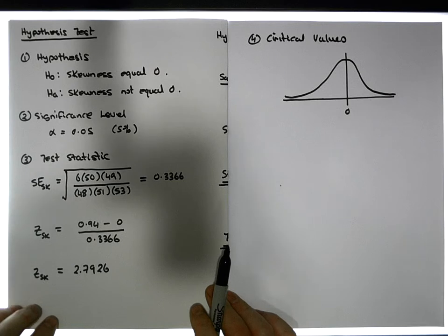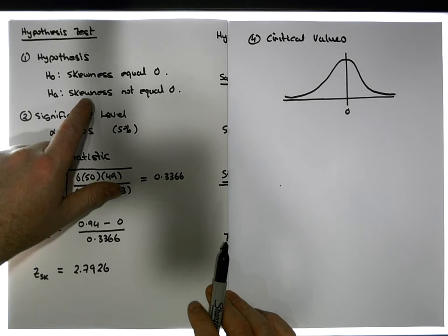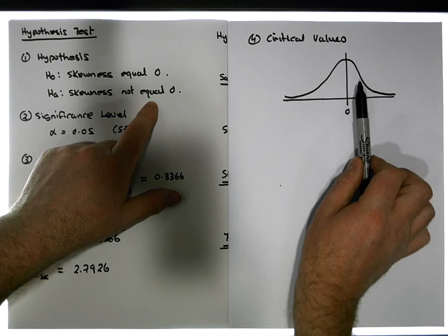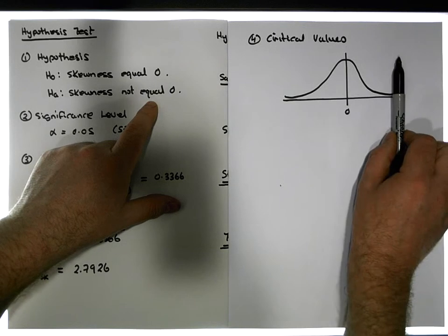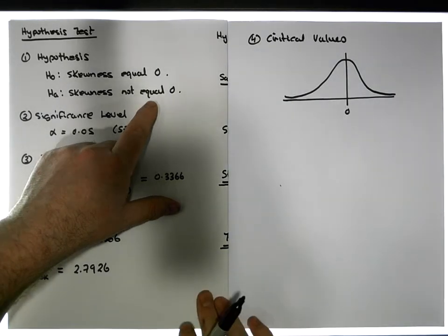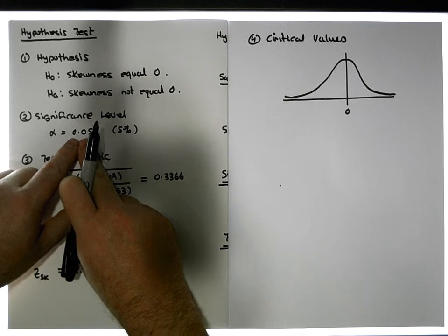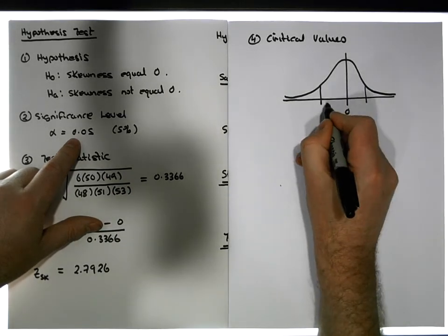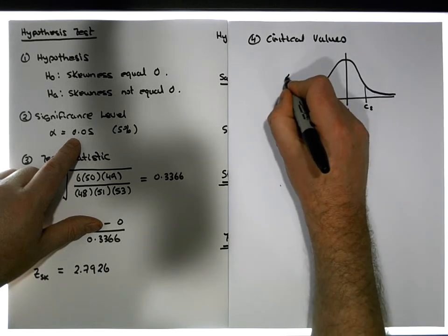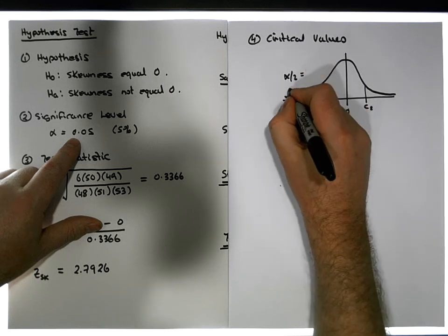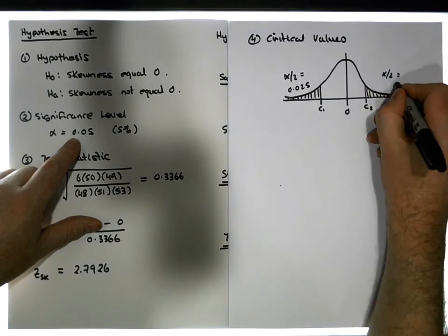This is actually a two-tail test, because we want to detect either positive or negative skew — whether the value falls on the positive or negative side of zero. We take our significance level and split it for the two-tail test, so alpha over 2 equals 0.025 goes into each tail.